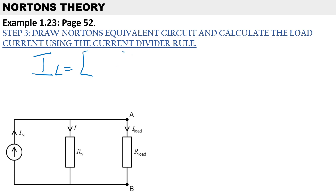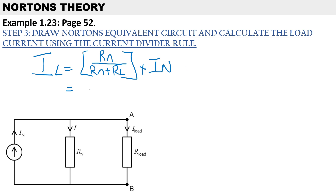To calculate the load current I_L using the current divider rule, it's Norton's resistance over (Norton's resistance plus the load resistance), multiplied by Norton's current. Substituting in: 18.75 over (18.75 plus 20 ohms), multiplied by Norton's current.